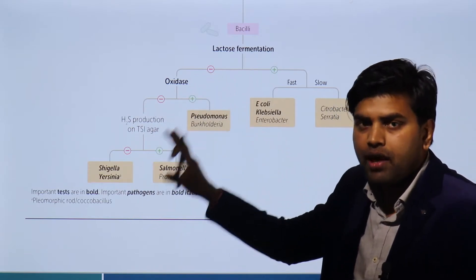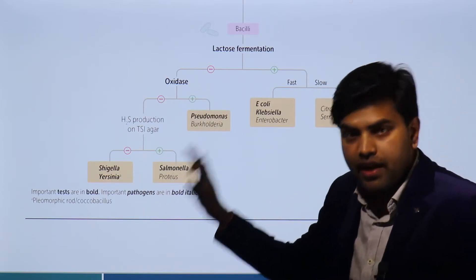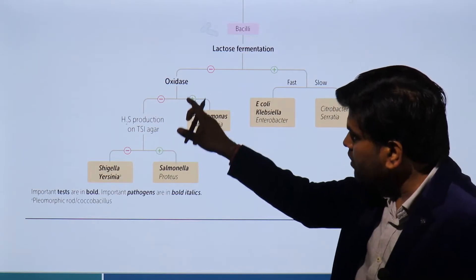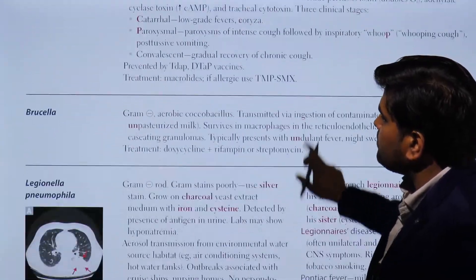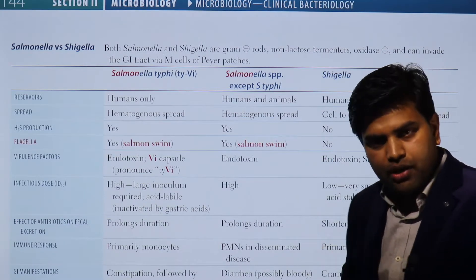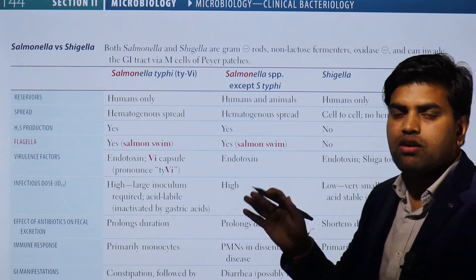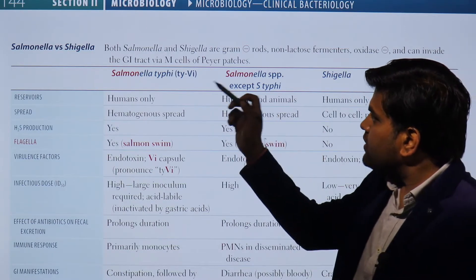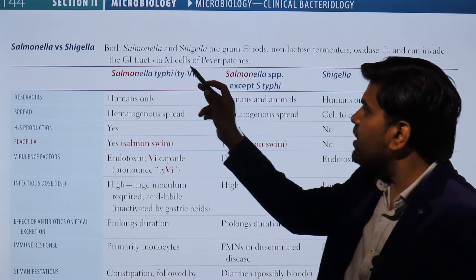Salmonella and Shigella are gram-negative bacilli that are lactose non-fermenters, so they appear pale in color. Pseudomonas was oxidase positive, but Salmonella and Shigella are oxidase negative. So we will discuss the gram-negative bacilli that are lactose non-fermenters and oxidase negative — that is Salmonella and Shigella. Both are gram-negative rods, non-lactose fermenters, and oxidase negative.